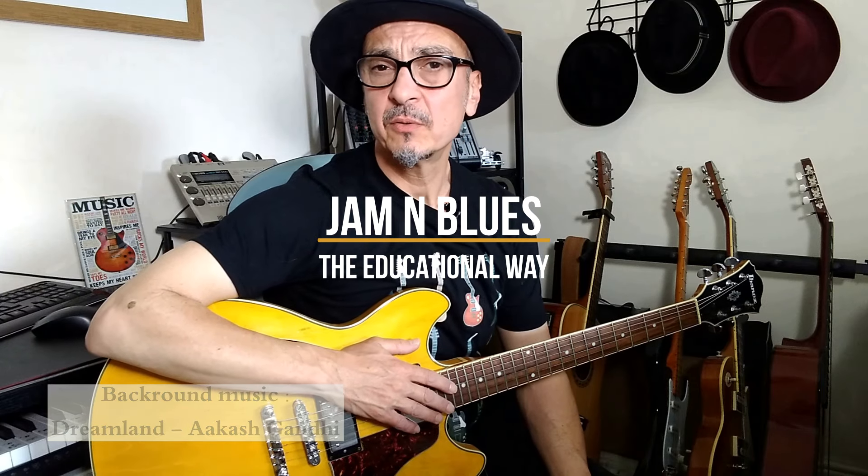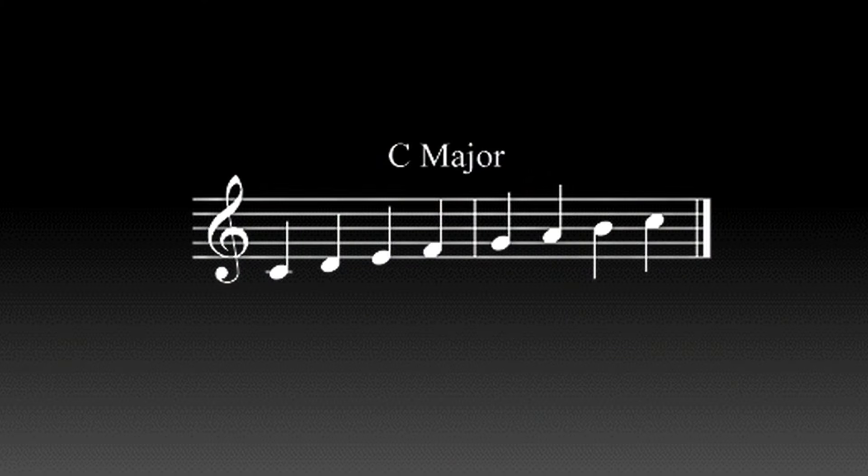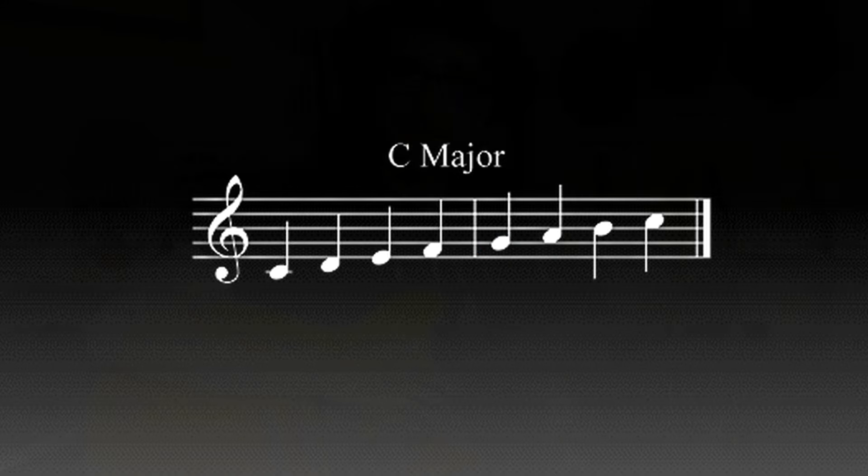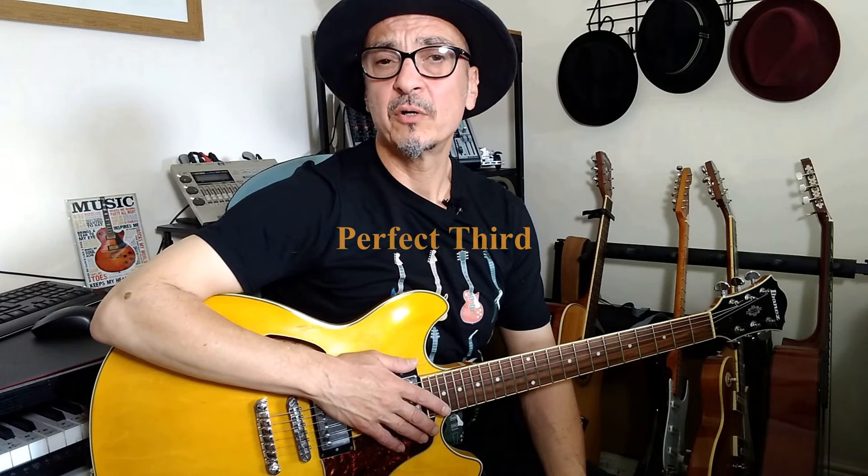First we have the major scale, and to build a chord we will use the first note, the third and the fifth. So if we have for example the C major scale, we will need the C as a root, the E note as a third and G note as the fifth. Sometimes we call the thirds big or great thirds, because there is a distance of two tones between the third and the root note.